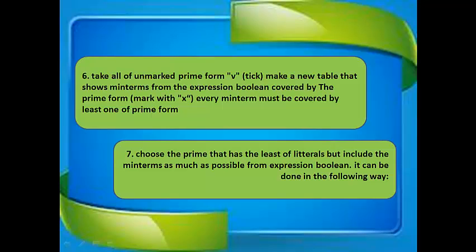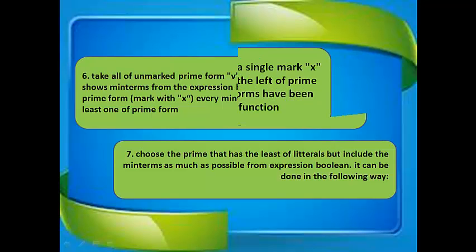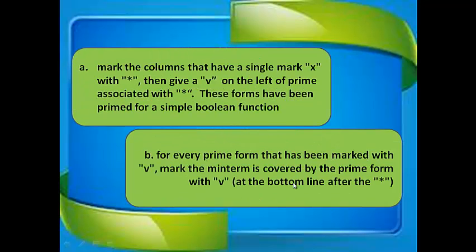Step 7: Choose the prime implicant that has the fewest literals but includes as many minterms as possible from the Boolean expression. This can be done as follows. Step a: Mark the columns that have a single mark x with an asterisk, then place a tick on the left of the prime implicant associated with that asterisk. These prime forms are essential for the simplified Boolean function.